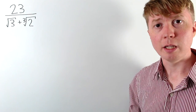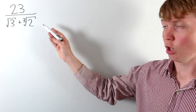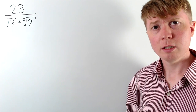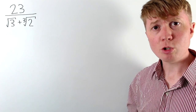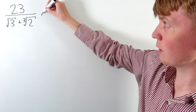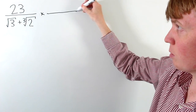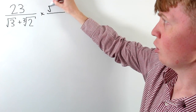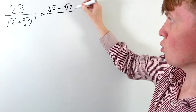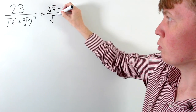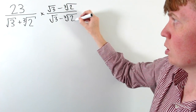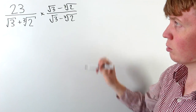We're going to rationalise the denominator of this fraction, where we've got a cube root term in the denominator. Getting rid of the square root term is still straightforward enough — we can apply this procedure of multiplying by (root 3 minus the cube root of 2) over (root 3 minus the cube root of 2), so that we don't change the value of the fraction.